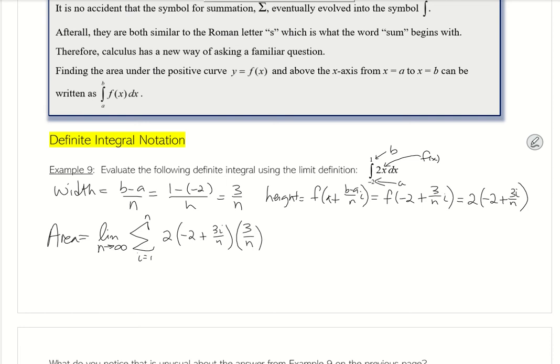So now if I simplify the 3 times 2, I'll get 6 over n. So then I get 6 over n times negative 2 plus 3i over n. Okay, so now I'm going to substitute—oh, I forgot the summation right here, i to n, i equals 1 to n. So now I'm going to replace the summation that I didn't write with the formulas that we had from the other day. So I'm going to write it over here.